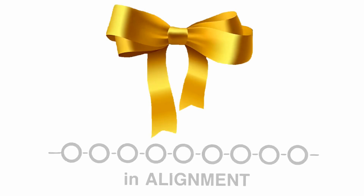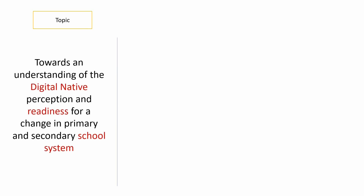In our previous tutorials we covered the importance of the golden thread and ways you can weave it through alignment. Today we will focus on how to consider the golden thread as you define your research plan. Here is a quick recap of our example as covered in the previous lessons — our topic: towards an understanding of the digital native perception and readiness for a change in the primary and secondary school system.